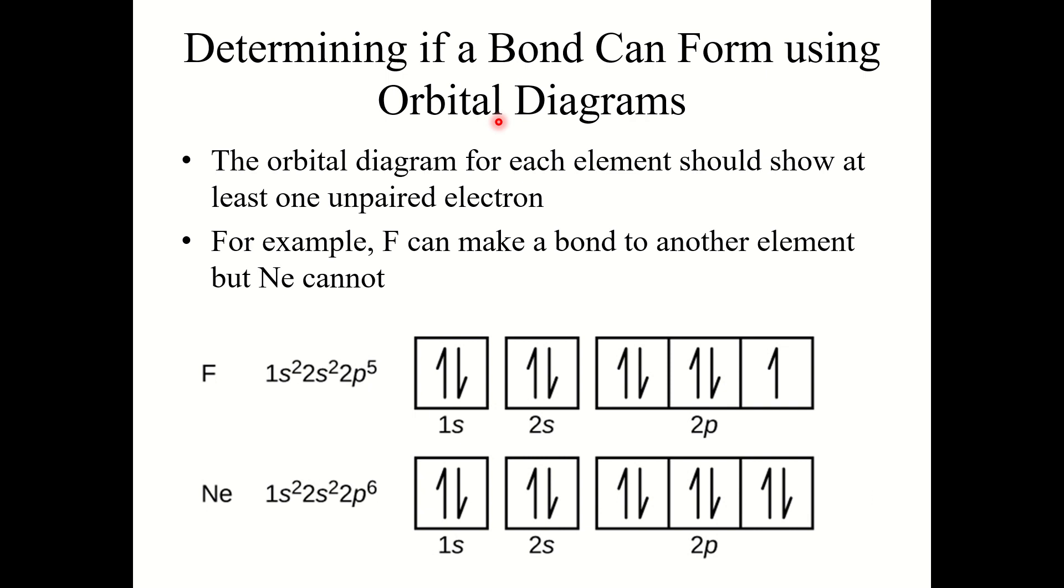Now let's take a look at orbital diagrams. We learned about these back in chapter 4. The orbital diagram for each element should show at least one unpaired electron. For example, if we look at the orbital diagram for fluorine, notice that fluorine has that one half-filled 2p orbital there. So fluorine can make a bond to another element because it's got that one half-filled orbital.